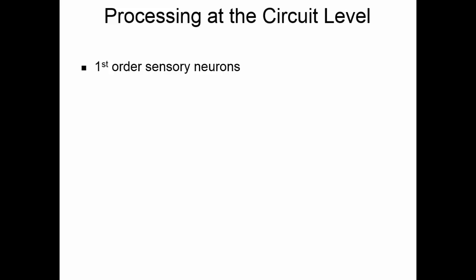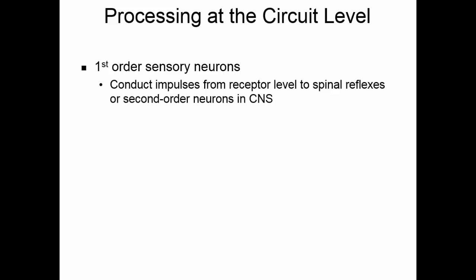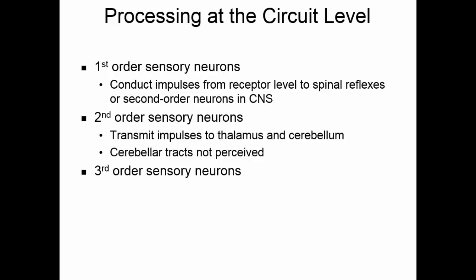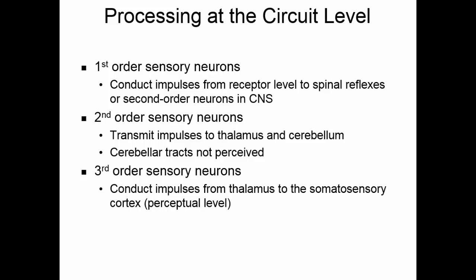The second level of processing in the somatosensory system is the circuit level. First-order sensory neurons conduct impulses from the receptor to spinal reflexes or to second-order neurons in the central nervous system. Most things that go to spinal reflexes also travel on a second-order neuron up the spinal cord. The second-order sensory neuron, inside the central nervous system, transmits impulses from the spinal cord up to the thalamus and sometimes to the cerebellum. Those impulses that go to the cerebellum are not perceived. Third-order sensory neurons conduct impulses from the thalamus to the somatosensory cortex, where we can perceive the stimulus.